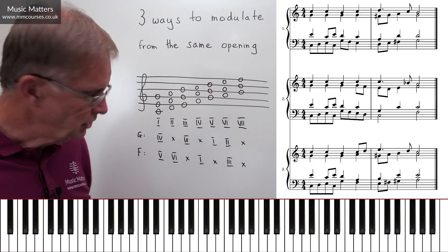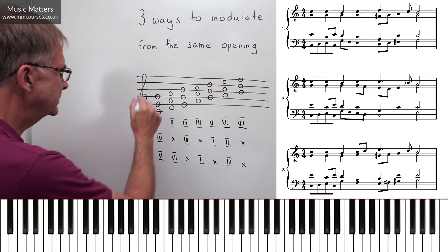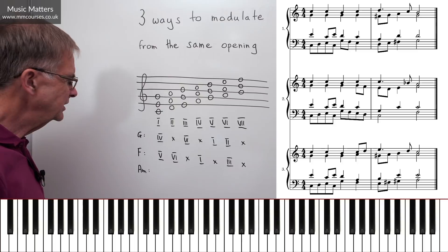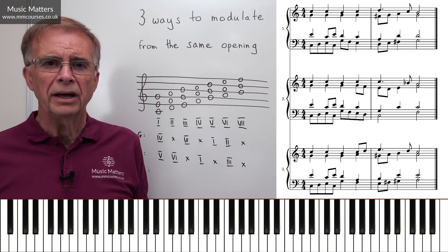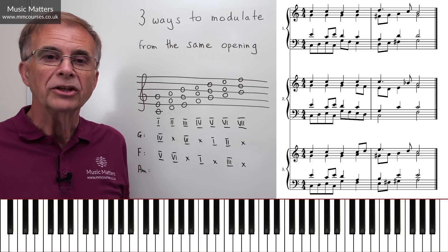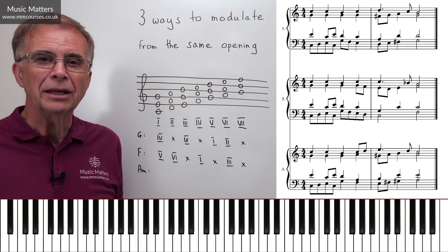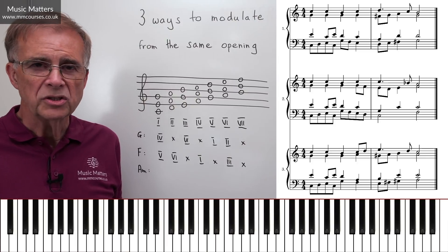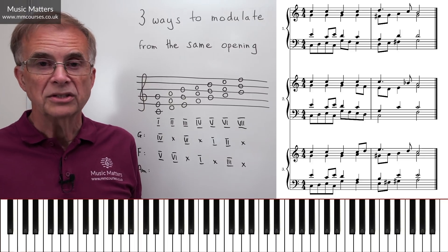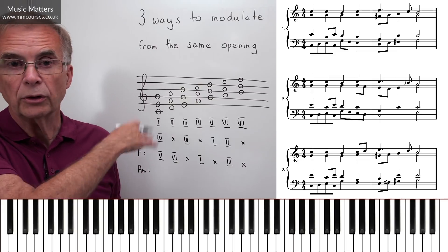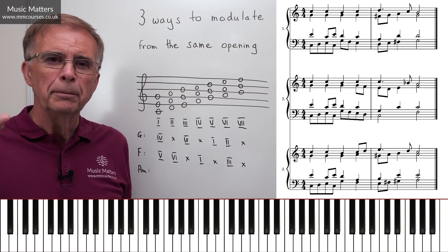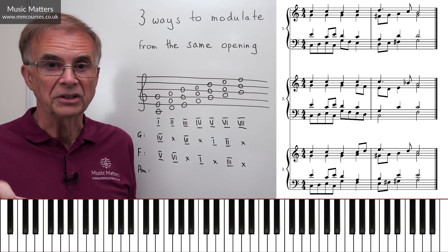The third version goes to the relative minor of C major, which is A minor. When you're going to a minor key and writing harmony, the default position is to think about the harmonic minor scale. You can use natural minor — that will throw up some slightly different pivot chords — and you can use melodic minor, but when writing harmony it's better to think harmonic minor. The clue's in the title: harmonic harmony.